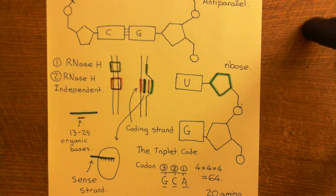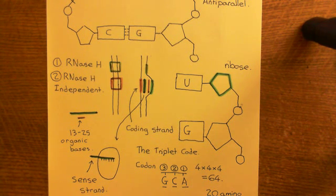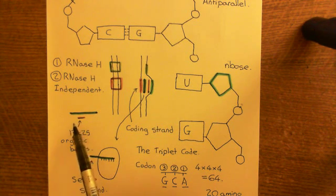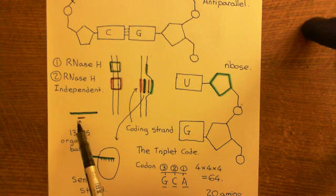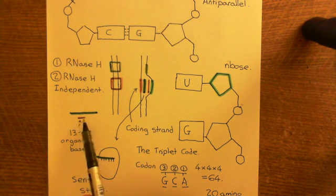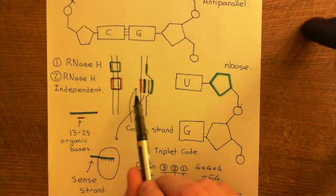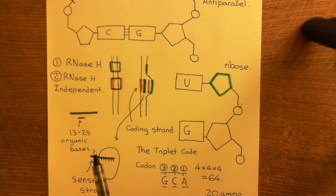Welcome to this next video in which we are discussing antisense oligonucleotides. The basic concept of an antisense oligonucleotide is that you will synthesize a short strand of single-stranded DNA which has a complementary sequence of organic bases to a piece of mRNA which you wish to stop being translated, and thereby inhibit the expression of a certain gene.